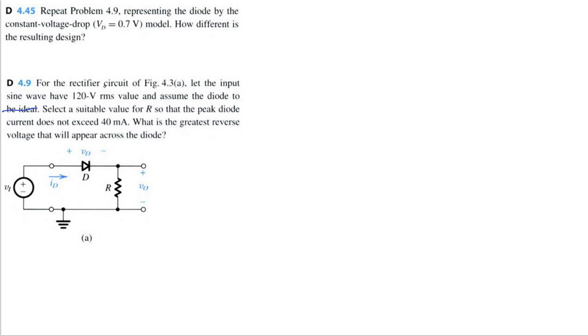So what does 120 volt root mean square value mean? Well, this is our input, it's got some kind of sine wave where this is time and this is V_N. V_rms is just the square root of the mean of all values.